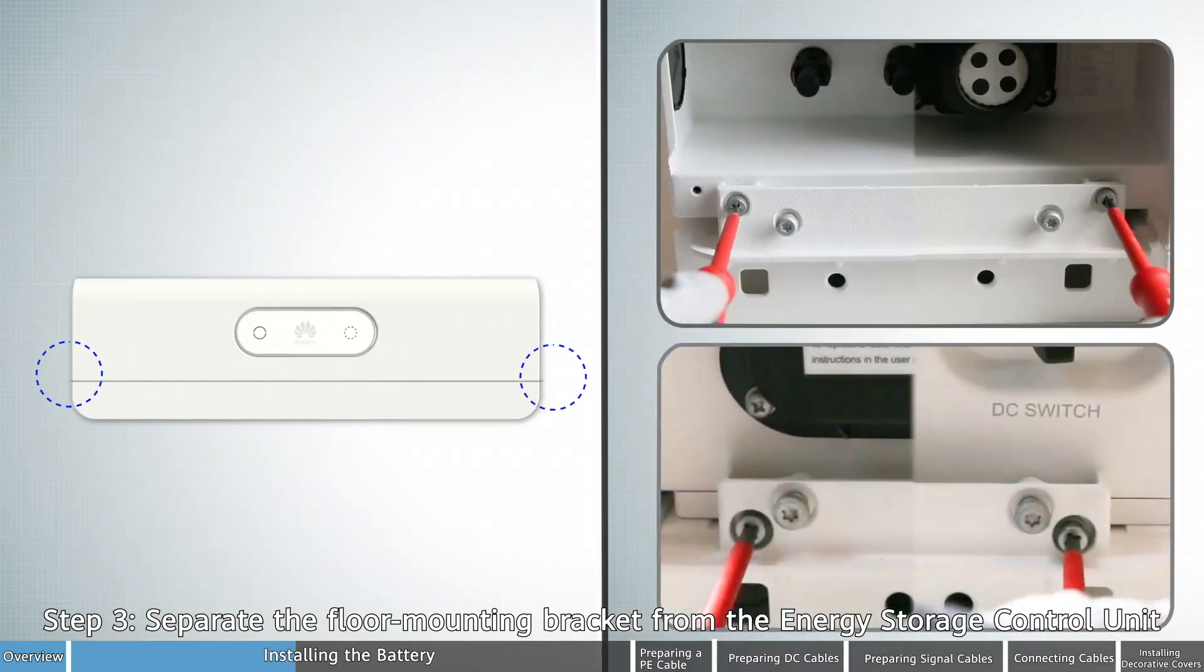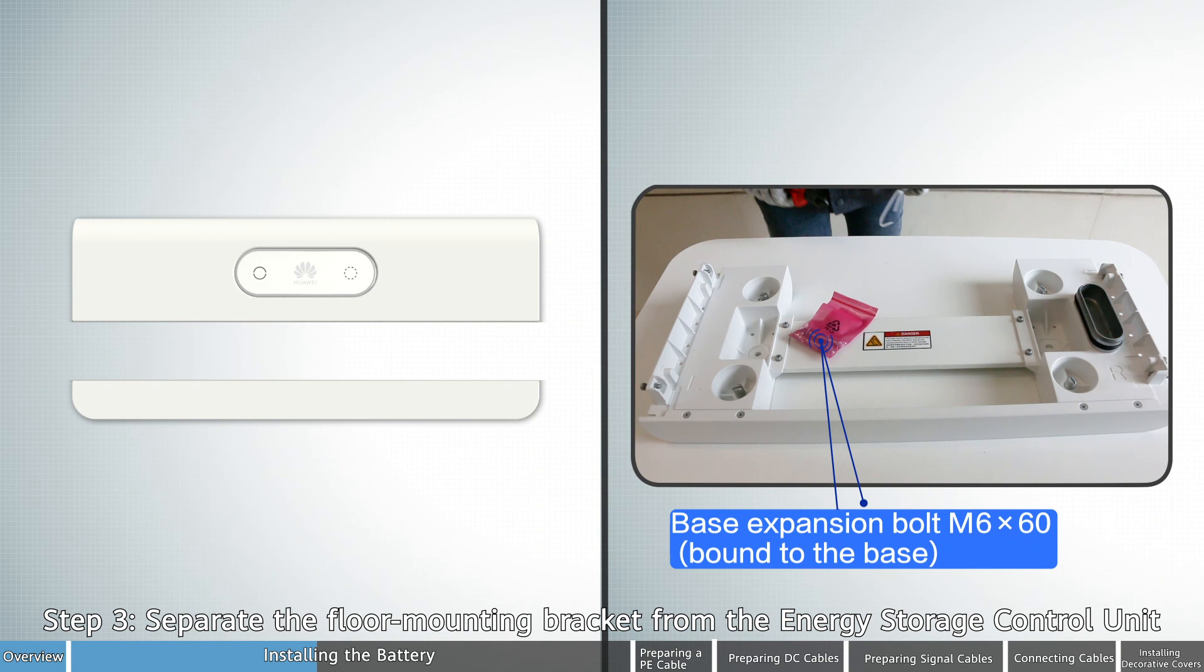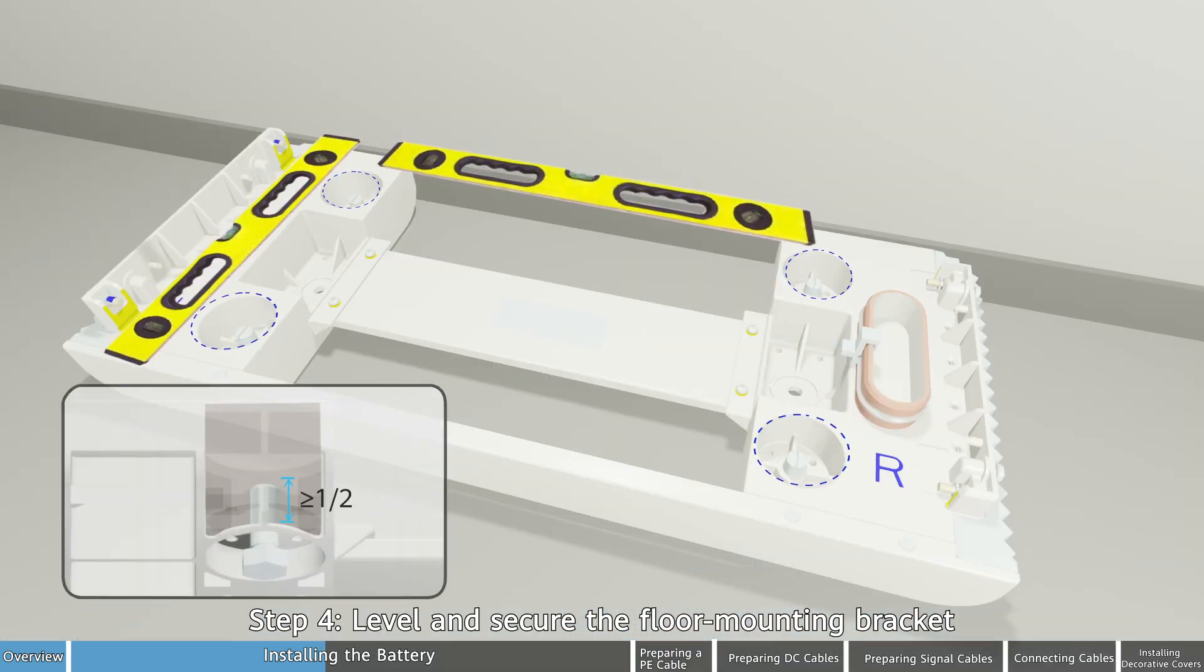Step 3: Separate the floor mounting bracket from the energy storage control unit. Step 4: Level and secure the floor mounting bracket.